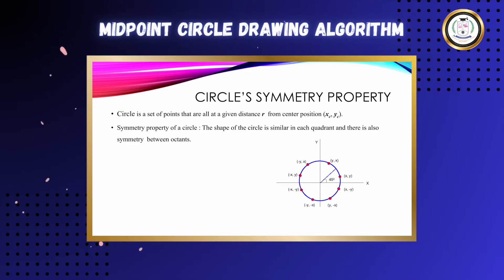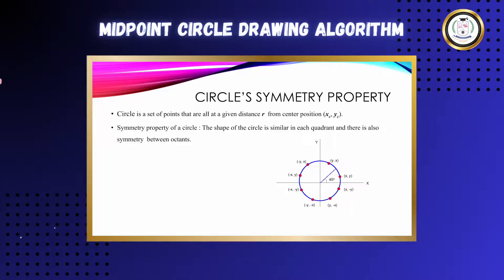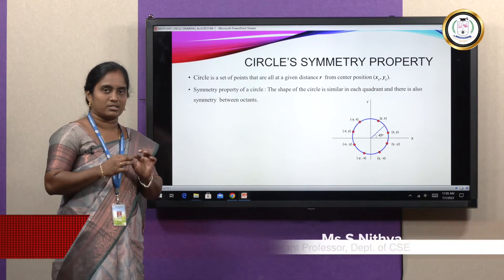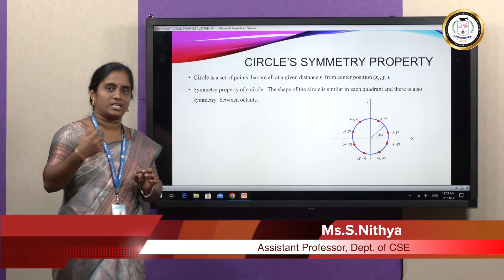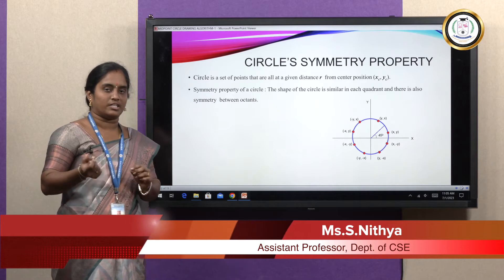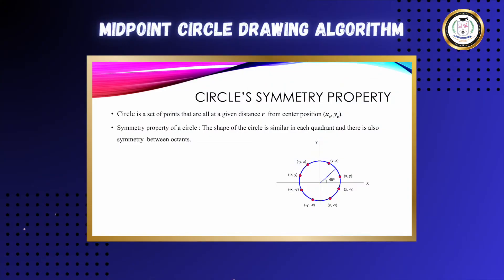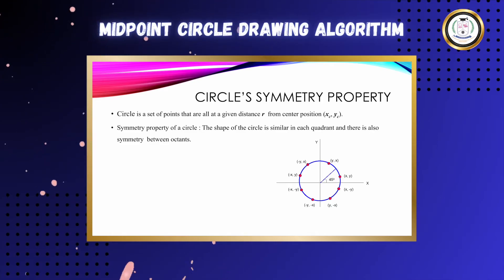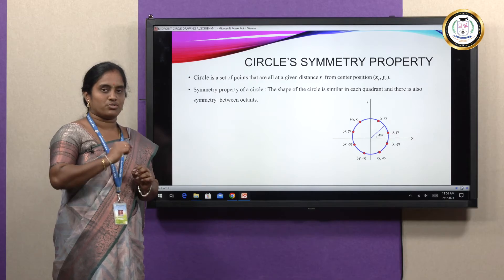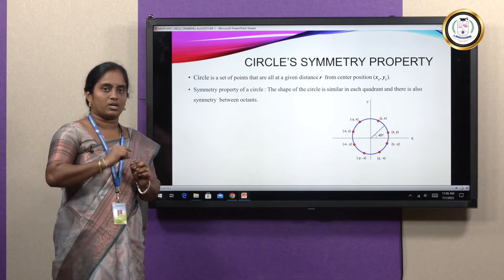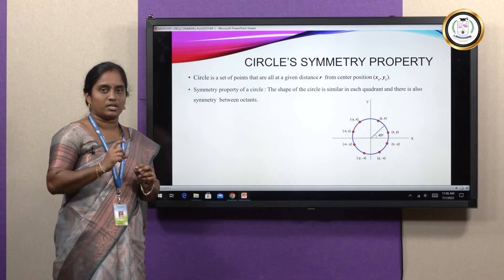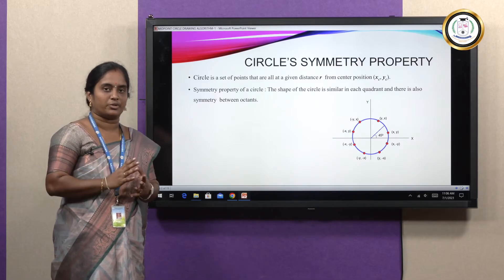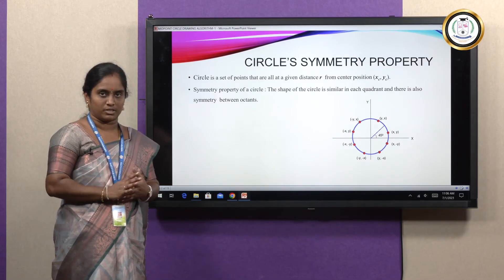A circle can be defined as a set of all points with the same uniform radius R, starting at center xc, yc. It can originate from the origin or any center. A circle has a property of symmetry — every quadrant is symmetrical to every other three quadrants. So when we draw a circle, we draw a particular octant. If a circle is divided into eight parts, one part is called an octant.